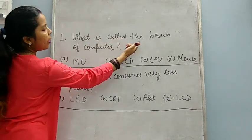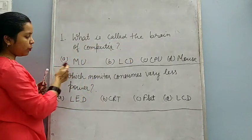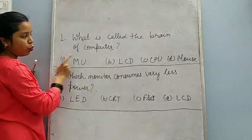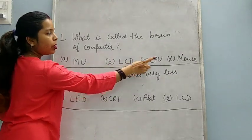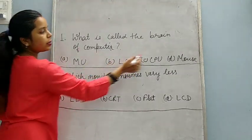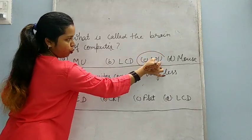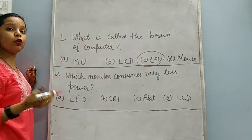What is called the brain of computer? You will get four options: MU, LCD, CPU, Mouse. Now your answer is CPU. CPU is called the brain of computer.